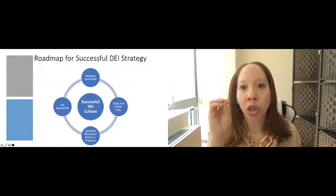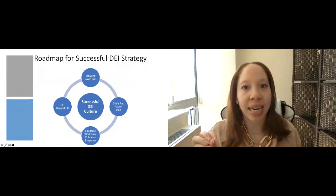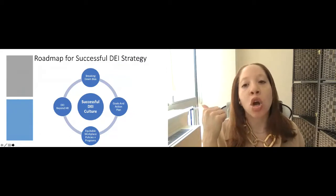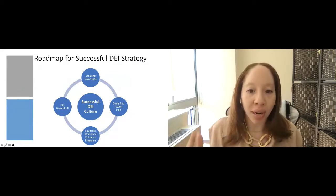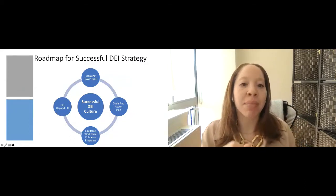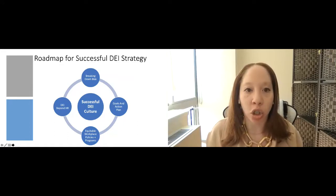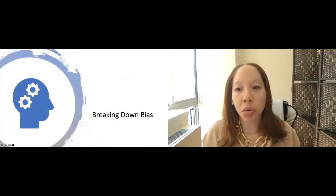So a successful D&I culture is really broken down into four key areas. So breaking down bias, creating goals and action plan, creating equitable workplace policies and programs, and looking at D&I beyond HR. So let's go through breaking down bias.